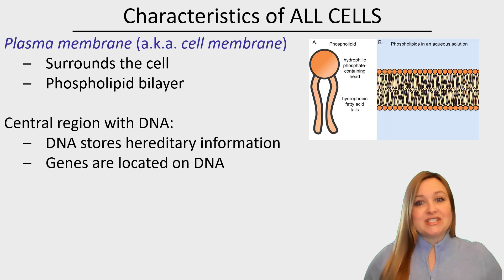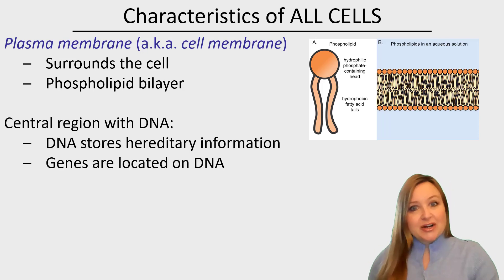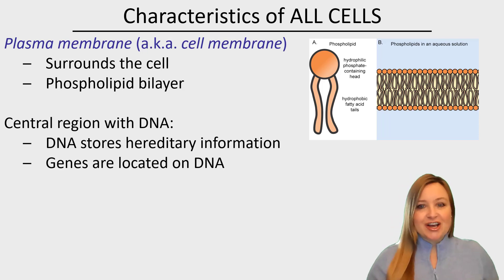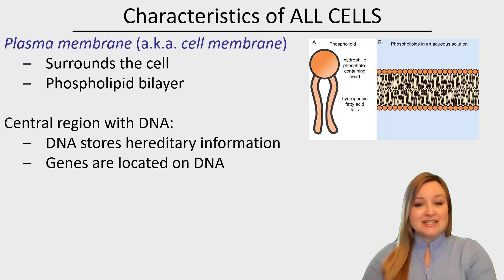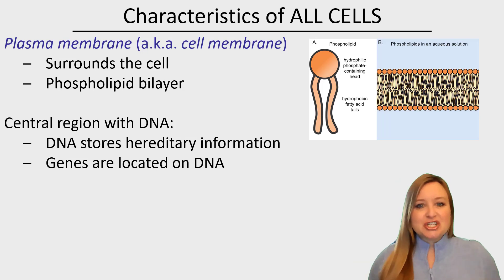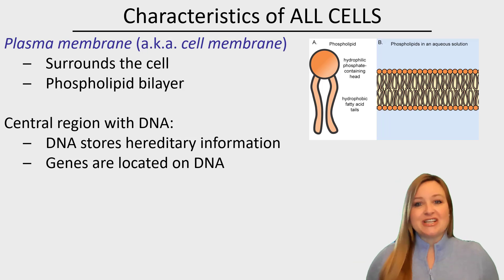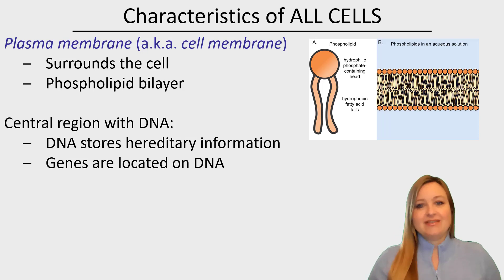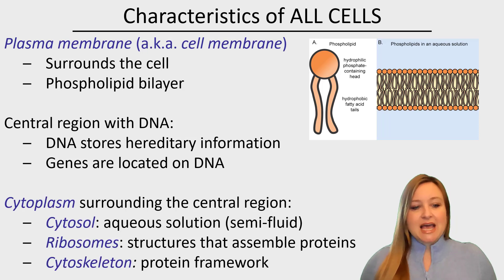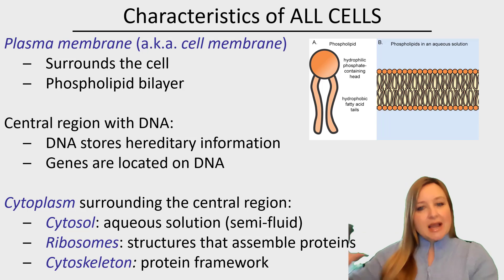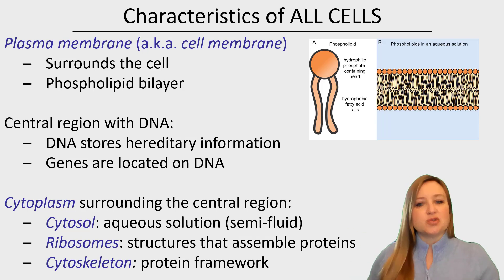Another characteristic of all cells, whether they're prokaryotic or eukaryotic, is that they have DNA, and generally that's stored in the center of the cell. We know that it's DNA that makes up the genes, and those are the hereditary information and all of the instructions for carrying out the activities of the cell. Also, all cells have a cytoplasm that surrounds that central region.